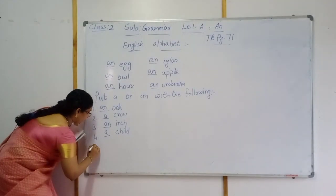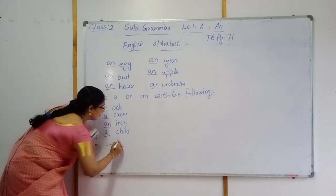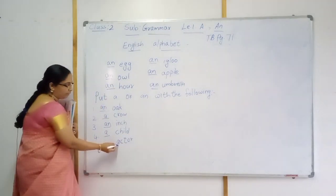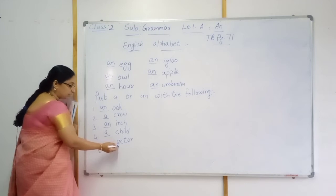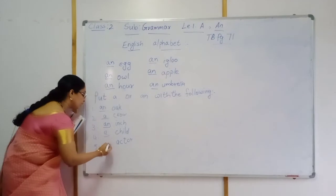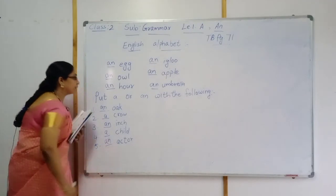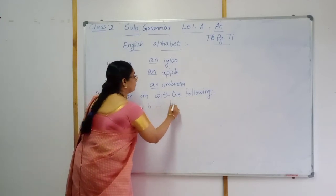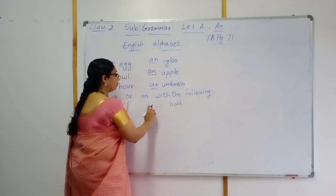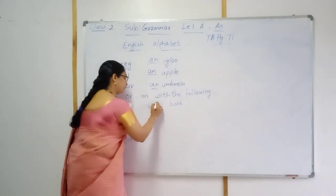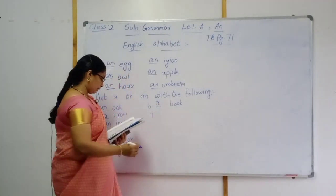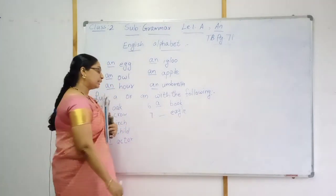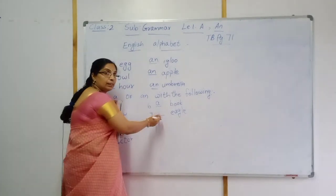Number five — actor. First letter A, is it vowel sound or consonant sound? Vowel sound. So AN actor. Number six — book. First letter B, this is a consonant, so A book. Number seven — eagle. First letter E, that is a vowel sound. So AN eagle.